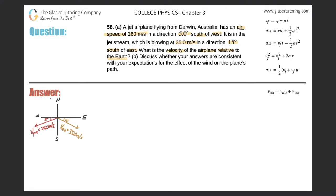They also told me that the jet is in the jet stream, which is blowing at 35 meters per second. It doesn't say what that velocity is relative to — it just says it's in the jet stream. Whenever they don't mention what the velocity is relative to, just assume it is relative to the earth. So here's the velocity of the air relative to the earth — the jet stream velocity — at 35 meters per second in a direction of 15 degrees south of east.